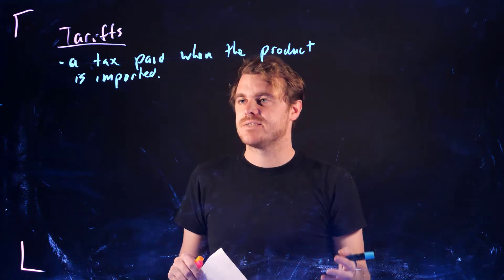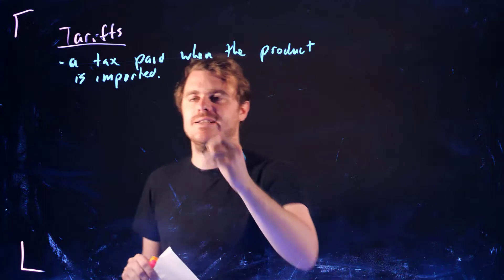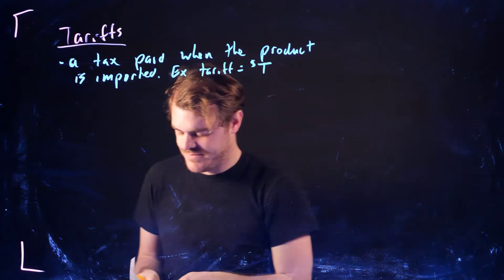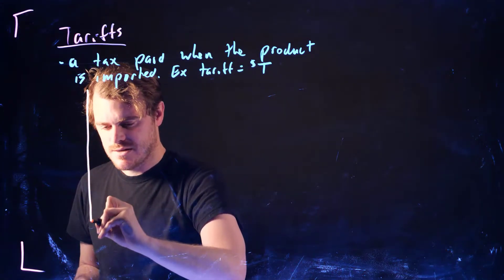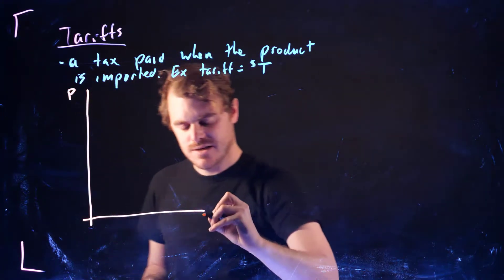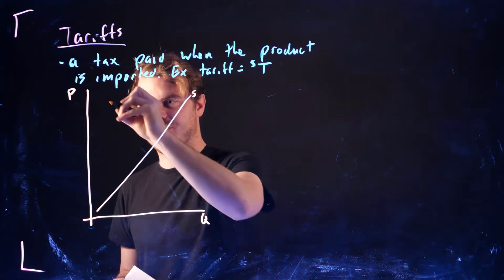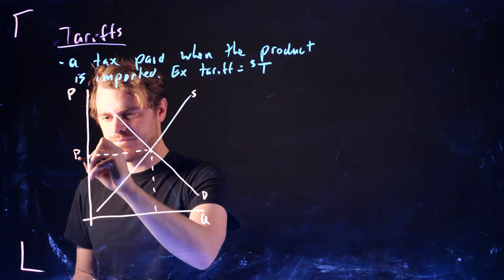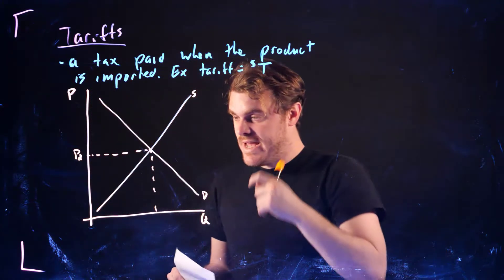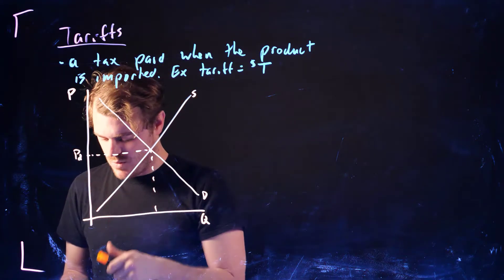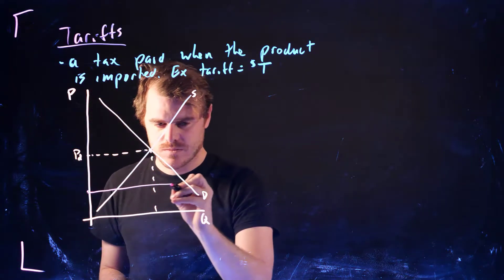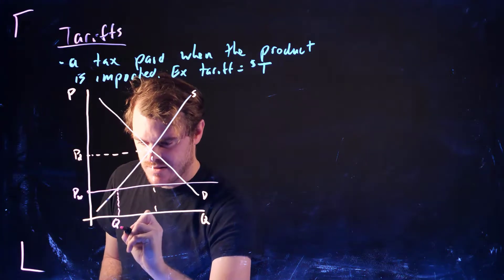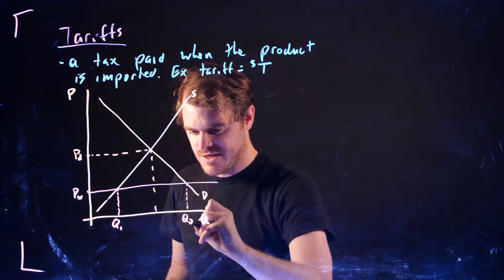So let's think about how this tariff is going to affect the market. Let's say the tariff equals capital T dollars. We draw our axes — price and quantity — with the domestic supply curve and domestic demand curve. This gives us the autarky price and quantity. Now let's say the world price, since Canada is importing, is going to be below this autarky price. So this is PW.